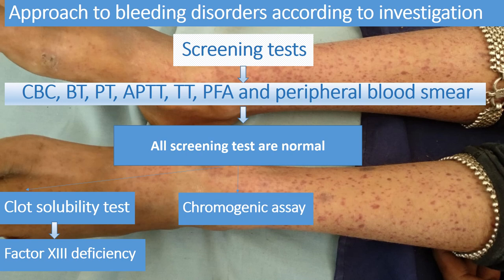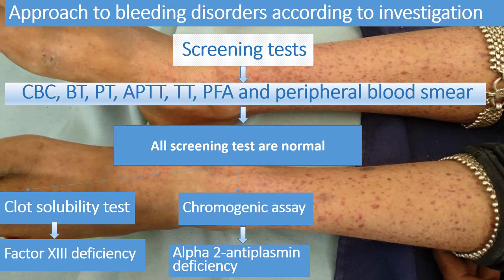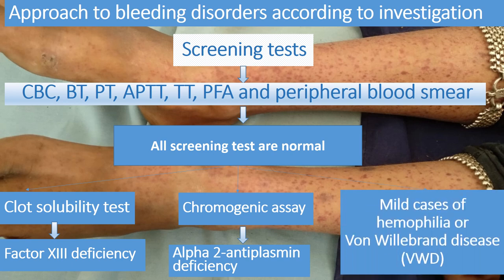If the clot solubility test is also normal, perform a chromogenic assay, because sometimes a child may have alpha-2 antiplasmin deficiency, which presents with bleeding but shows no abnormal screening tests. Also, mild cases of hemophilia or mild von Willebrand disease can present with bleeding with all normal screening tests — these must be ruled out as well.